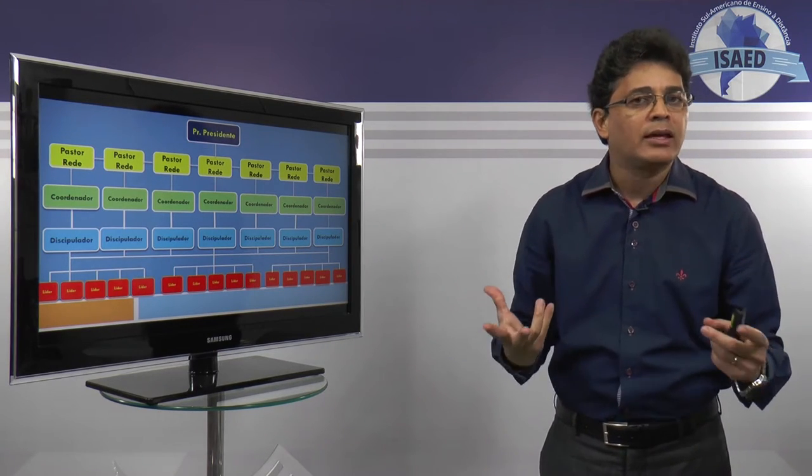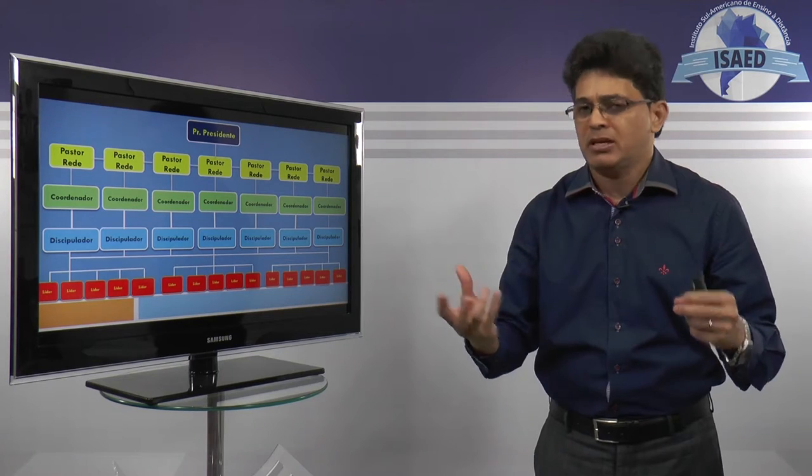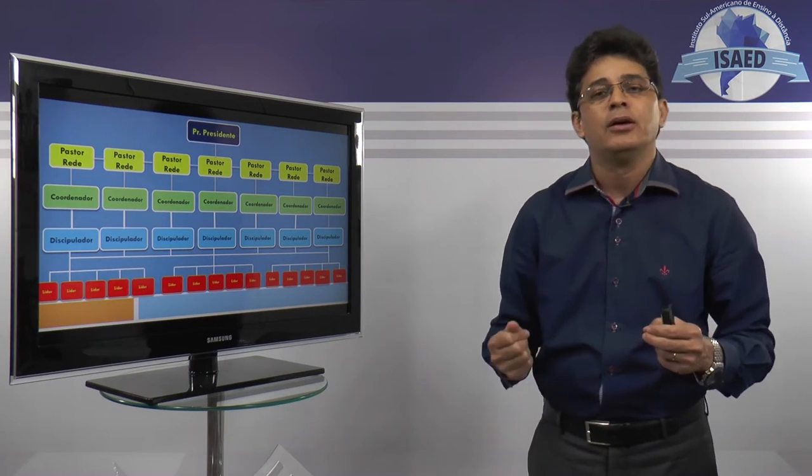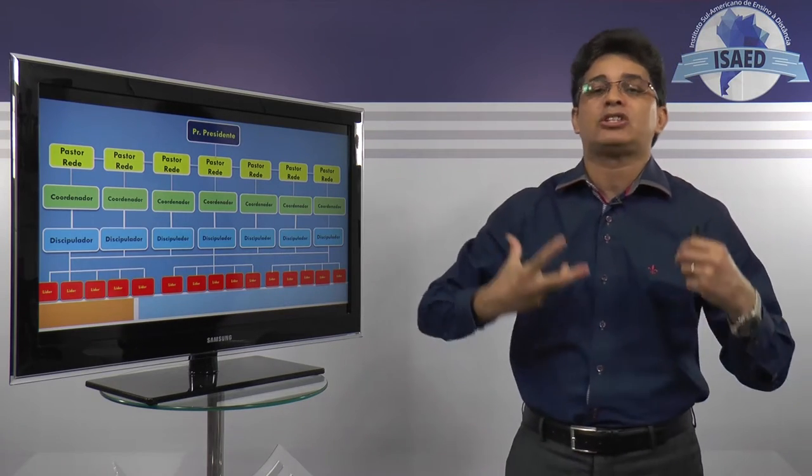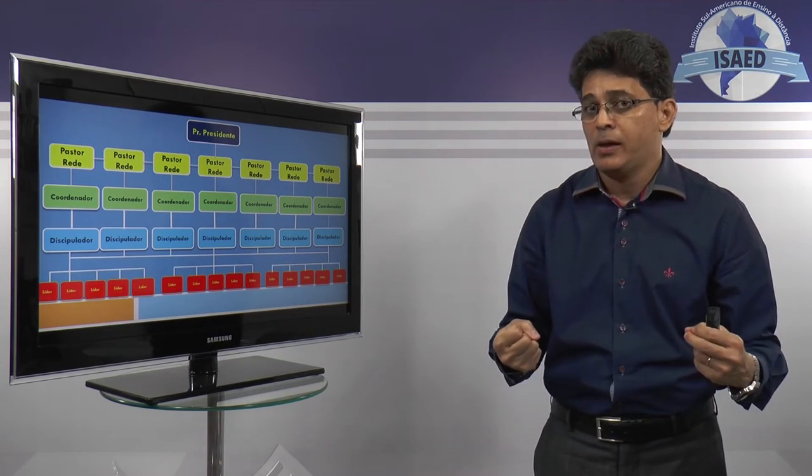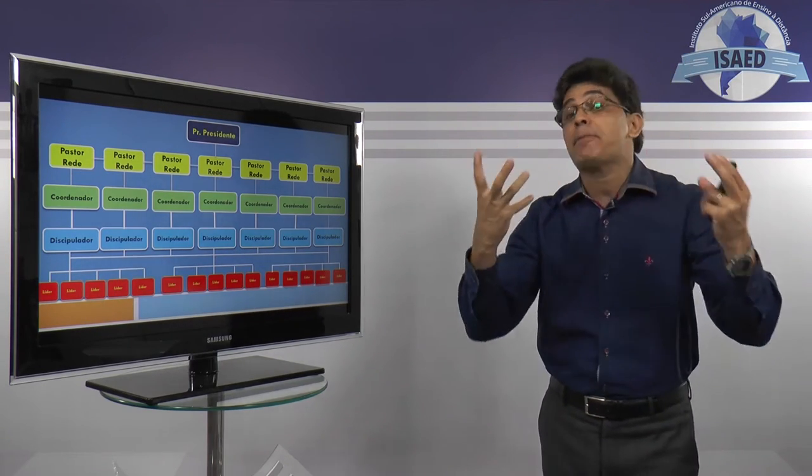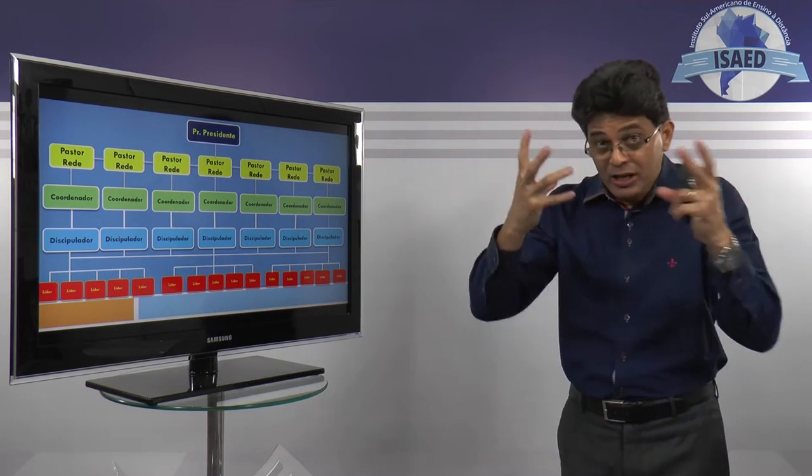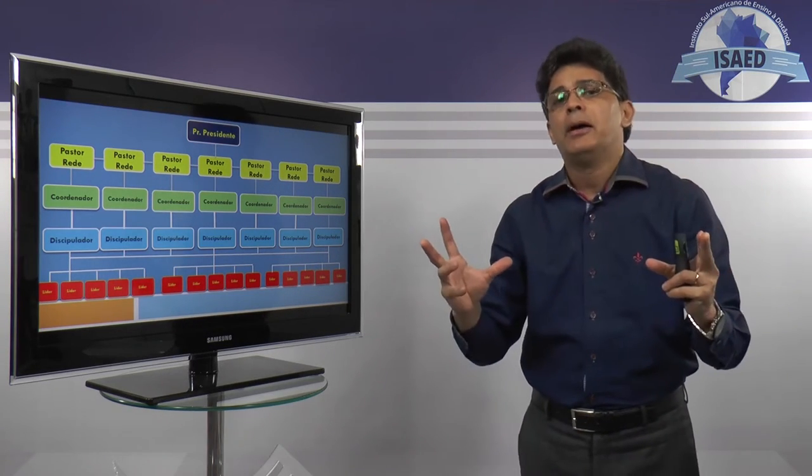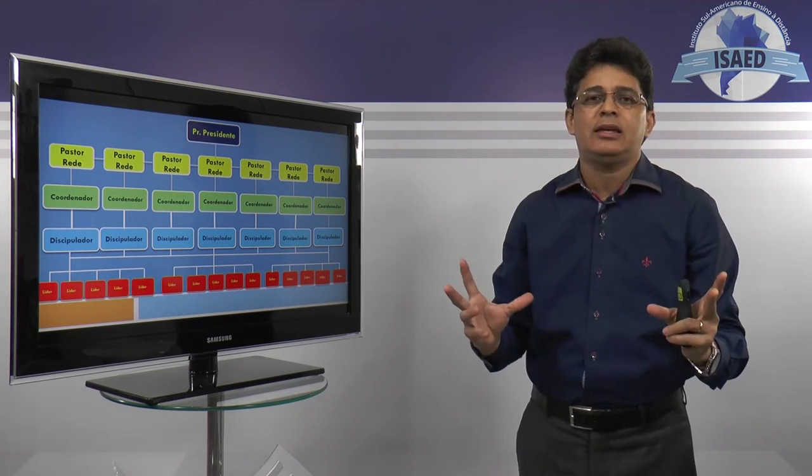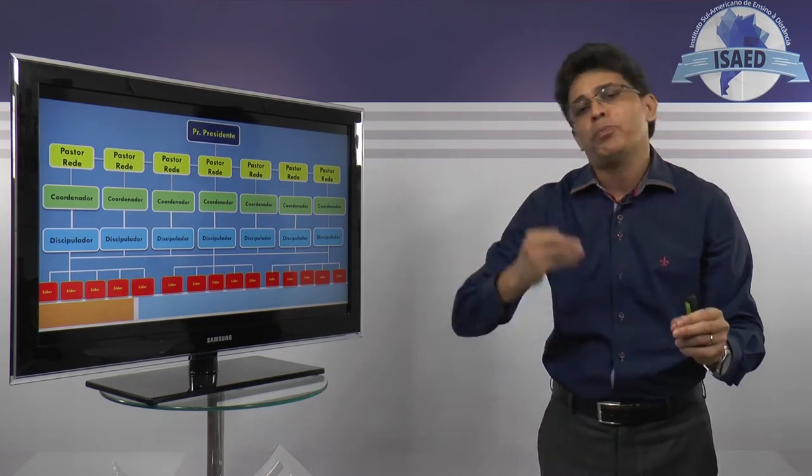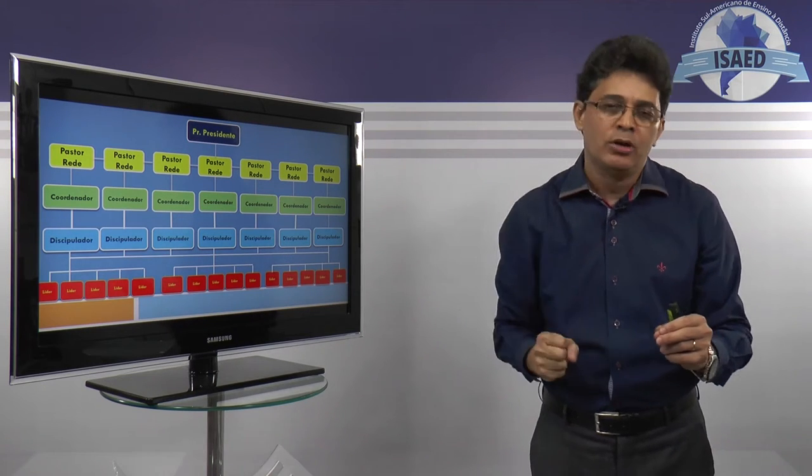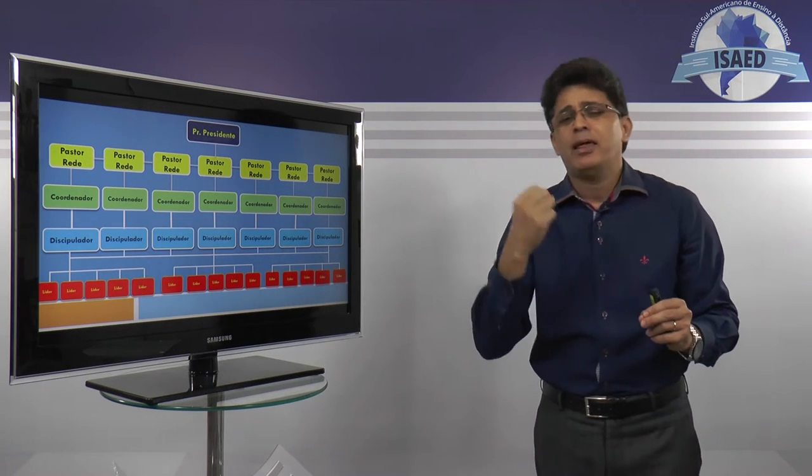Por exemplo, há muitos que estão ali numa célula que de repente não vão ser líderes, mas poderão ser um secretário, poderão ser um anfitrião que vem abrir as portas da sua casa para recepcionar uma célula. Mas o líder precisa ter essa percepção, esse olhar ampliativo para tentar entender que todos que estão ali podem fazer parte do projeto da multiplicação de uma célula.